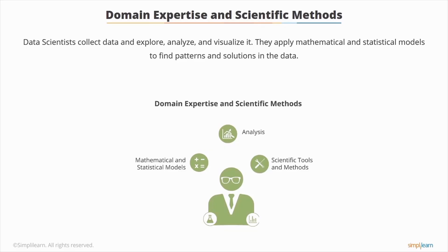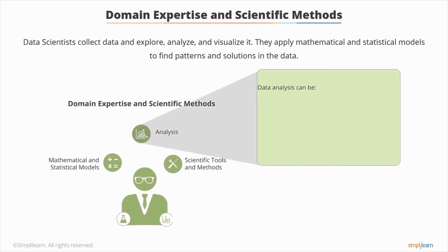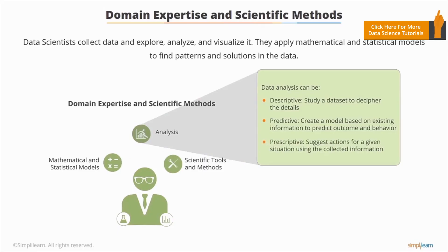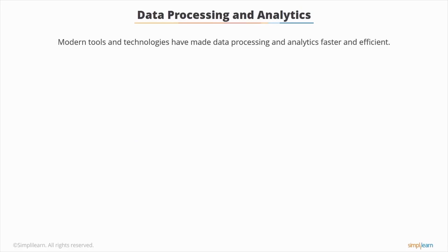It helped them test their hypothesis or create a new one. In the next slide we will see how data science technology has made this process faster and more efficient. But before that, let's understand the different types of data analysis. Data analysis can either be descriptive, where one studies a dataset to explain what happened, or predictive, where one creates a model based on existing information to predict the outcome and behavior. It can also be prescriptive, where one suggests the action to be taken in a given situation using the collected information.